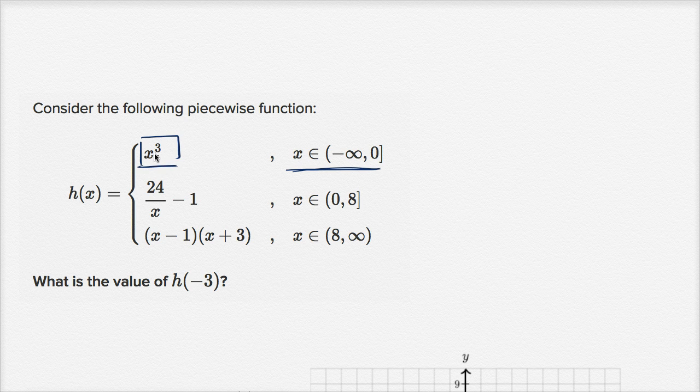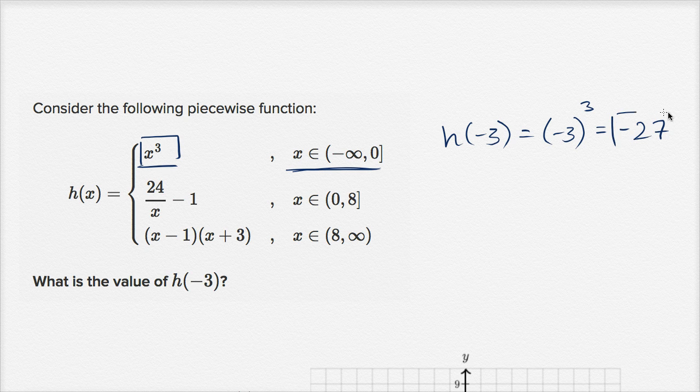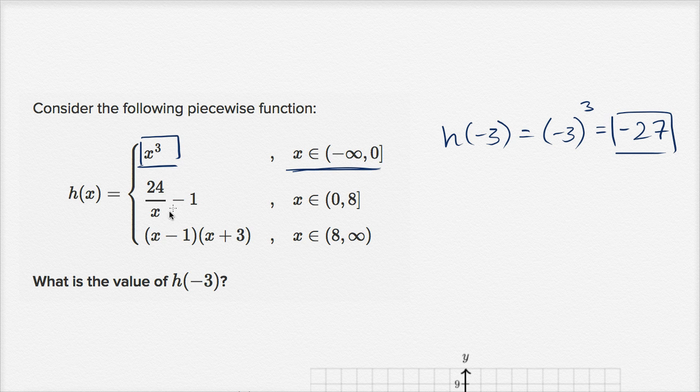And so for h(-3), we're going to take -3 to the third power. So h(-3) is going to be -3 to the third power, which is -27. And we're done, that's h(-3). Because we are using this case, you could almost just ignore these second two cases right over here.